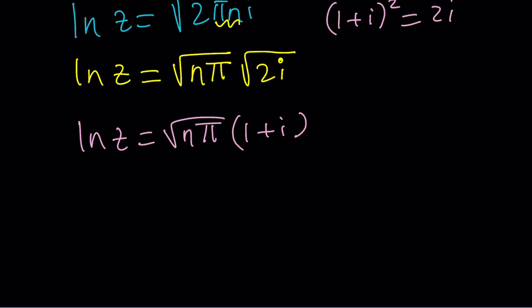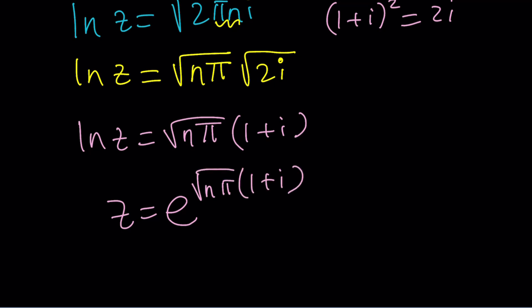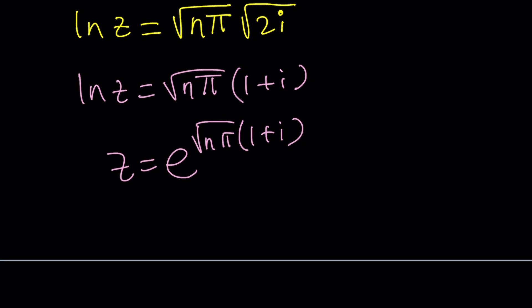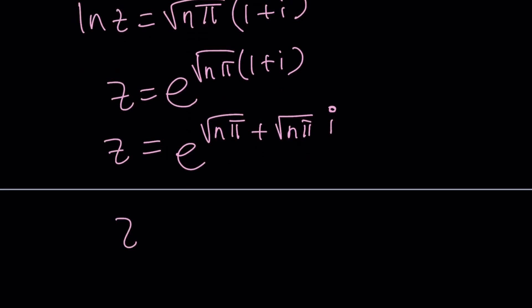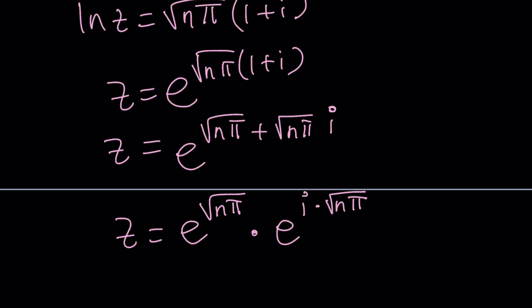To find z from here, we're going to do e to the power of both sides. So z is going to be e to the power √(nπ) multiplied by (1+i). So how do you simplify something like this — e to the power of a complex number? You need to separate. Let's go ahead and separate them into e to the power √(nπ) plus √(nπ)·i. Since the exponents are added, that means multiplication: e to the power √(nπ) times e to the power i·√(nπ). I wrote it as i times something because I'm going to use Euler's formula again, but this time backwards, to write it in standard form.